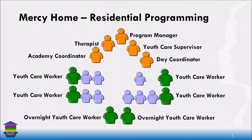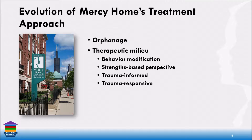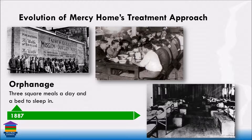Briefly, the evolution of our approach: we started as an orphanage in 1887 and eventually adopted the concept of a therapeutic milieu. We started in a very behavioral way, then tried to move toward a more strengths perspective — not just looking at what's wrong, but what's going right. Then we became a little trauma-informed, and now I would say we are moving toward a more trauma-responsive orientation. Mercy Home seems to be really good at record-keeping — we have records from way back in the 1800s.